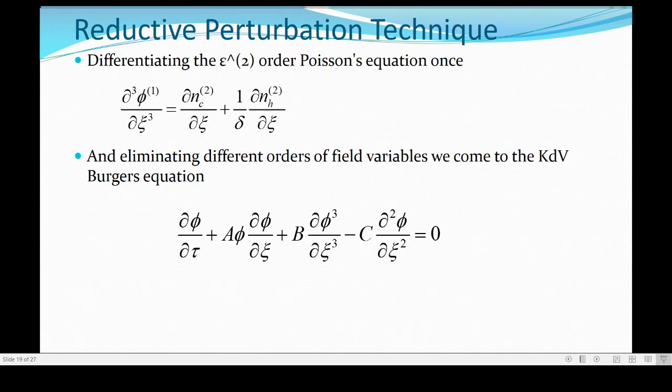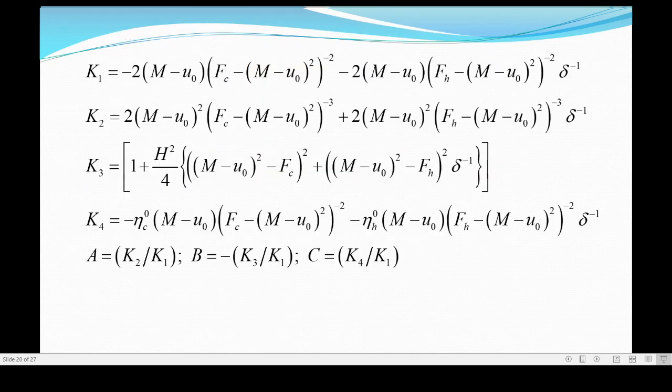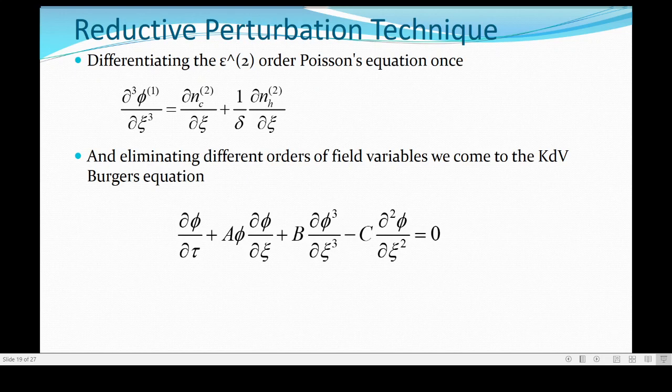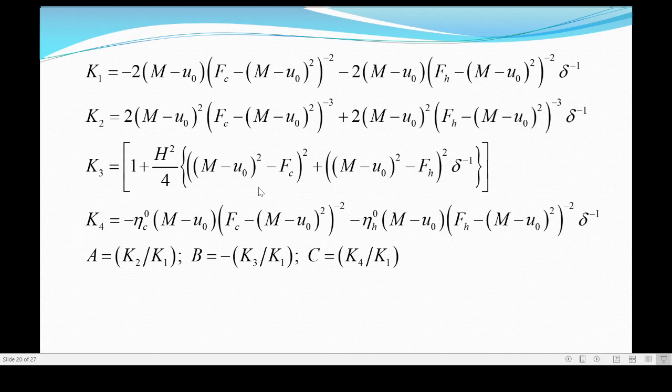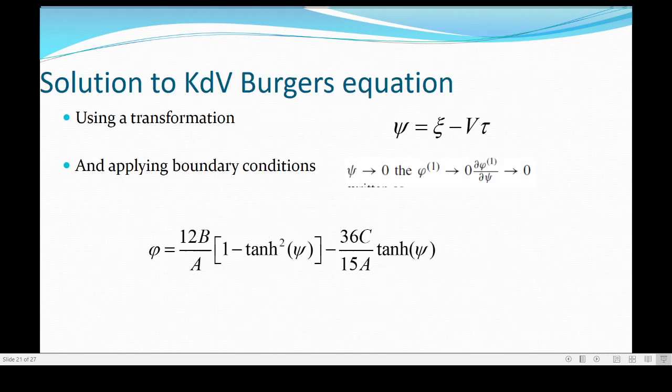So, after some elimination, we get the KdV Burgers equation like this. Here, this three should be here, is the KdV Burgers equation. Now, as we have used the KdV equation earlier, the constants come in terms of A, B, C. I have just written for that problem, for this problem that we have considered. So, A, B, C are represented by this M, Uc, Fc, Fh. These are the factors.